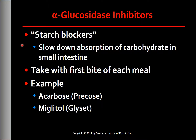Next are alpha-glucosidase inhibitors, also known as starch blockers. These drugs work by slowing down the absorption of carbohydrates in the small intestines. Taken with the first bite of each meal, they are most effective in lowering postprandial blood glucose. Their effectiveness is measured by checking 2-hour postprandial glucose levels. Acarbose and miglitol are the available drugs in this class.